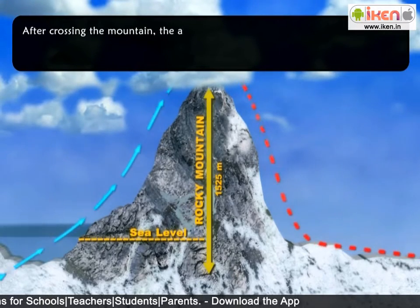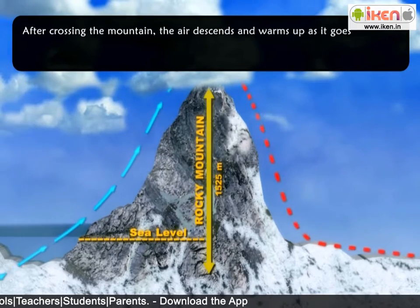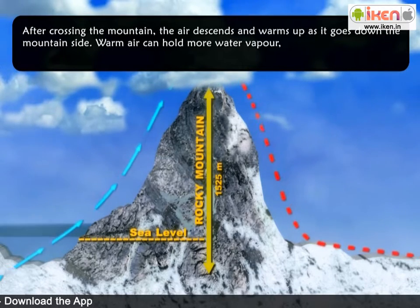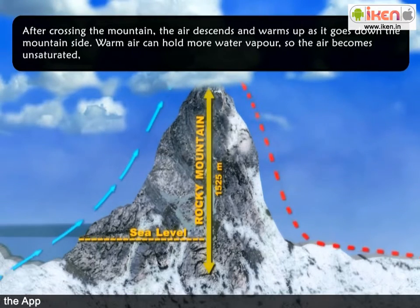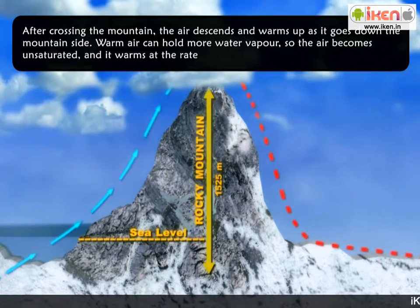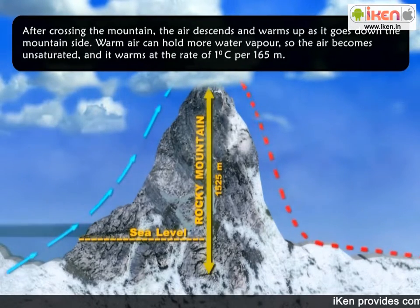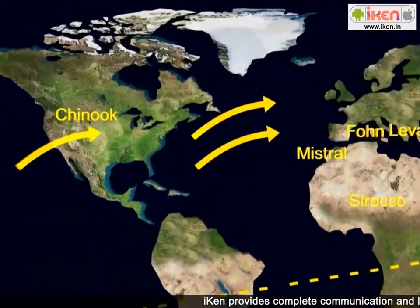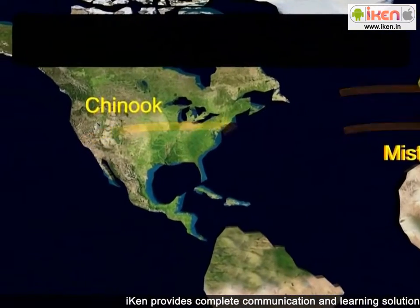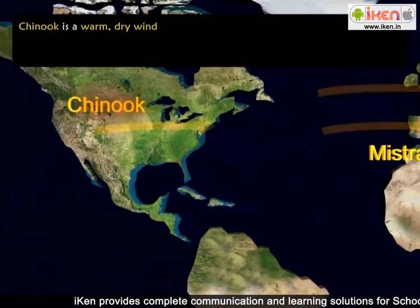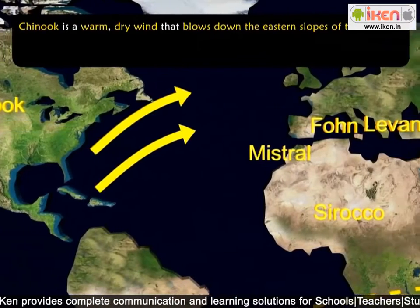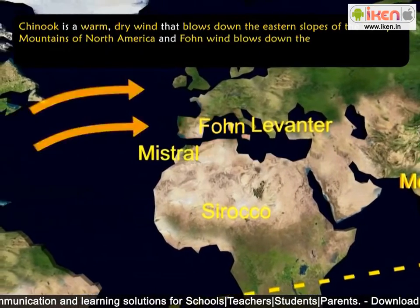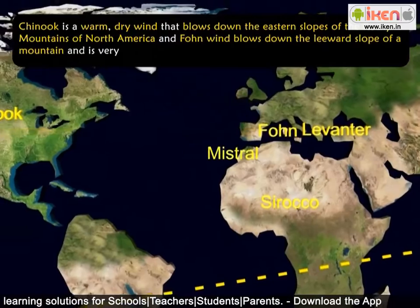After crossing the mountain, the air descends and warms up as it goes down the mountainside. Warm air can hold more water vapor, so the air becomes unsaturated and warms at the rate of 1 degree Celsius per 165 meters. Chinook and Foehn are two examples of descending winds. Chinook is a warm, dry wind that blows down the eastern slopes of the Rocky Mountains of North America. Foehn wind blows down the leeward slope of a mountain and is very dry and hot.